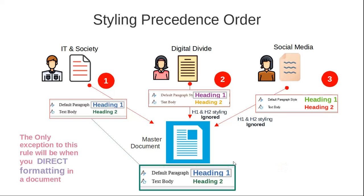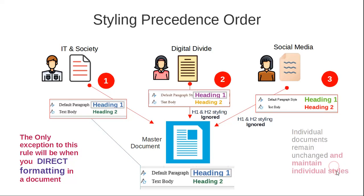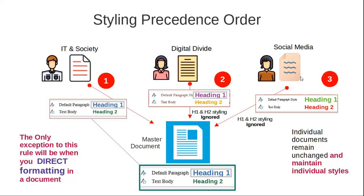The only exception to this rule is if any of these documents have used direct formatting — for example, selecting a piece of text and making it bold or changing it to another color. That direct formatting will be carried forward and visible inside the master document. But if you have applied no direct formatting and controlled your document through styling alone, that styling will be ignored if a style has already been defined by the first document imported.